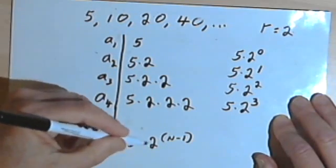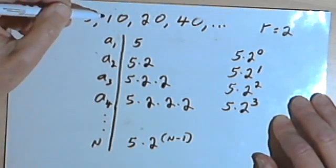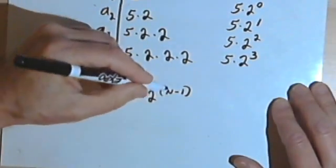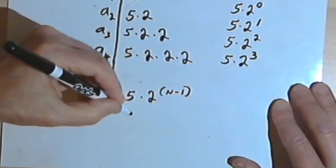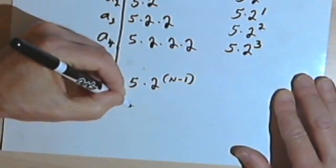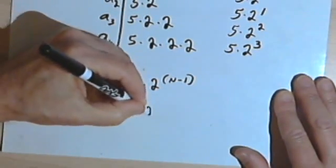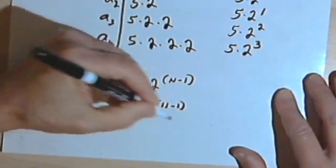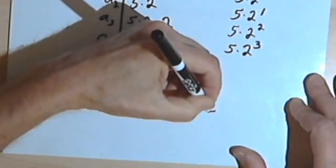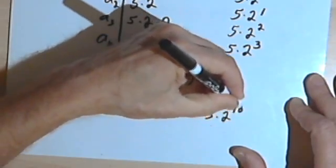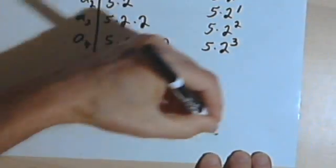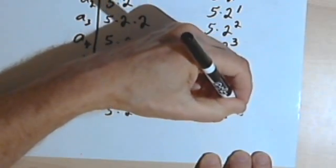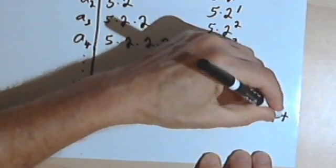So now I've got a general rule here for this sequence. And if I want to find term number 11, well, all I'll do is replace the n with an 11. So that means I can take that as 5 times 2 to the 11 minus 1. 11 minus 1 is 10, so that's 5 times 2 to the 10th. 2 to the 10th is 1,024.